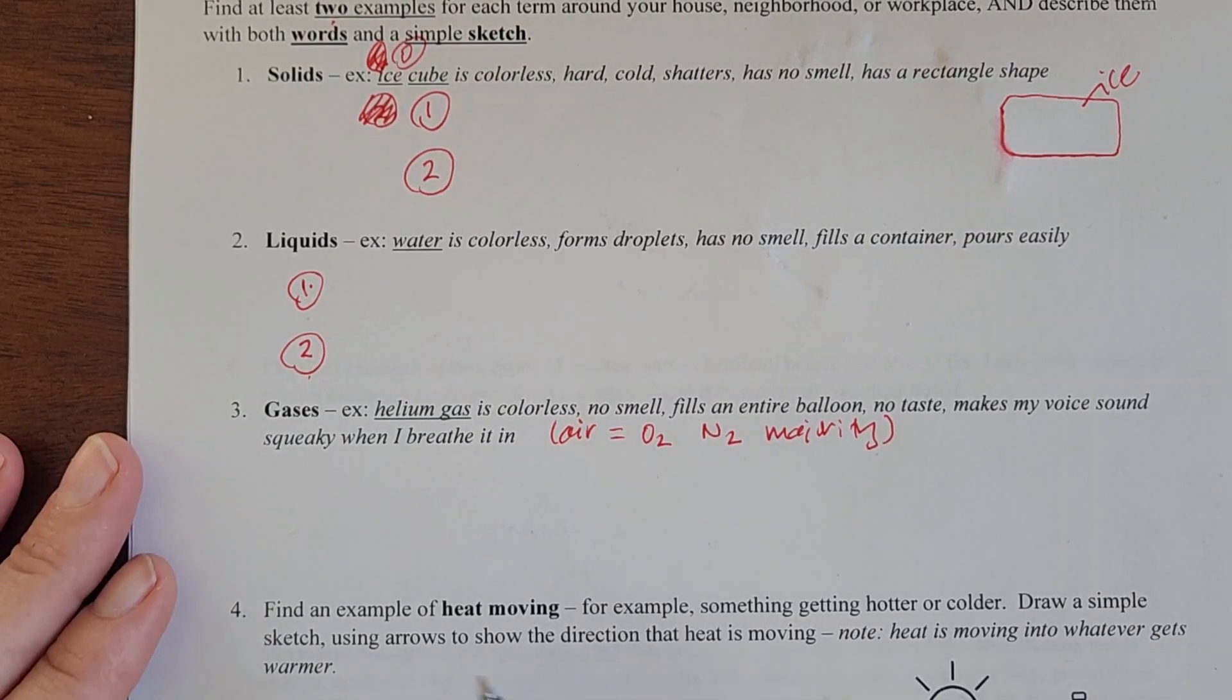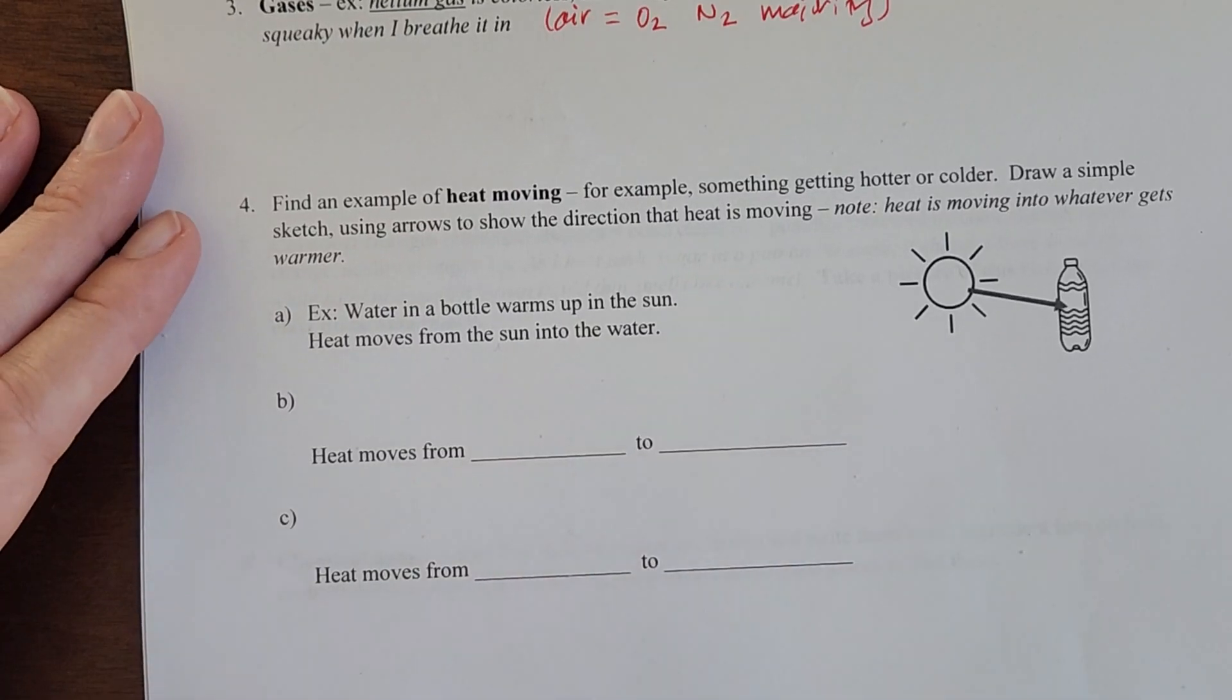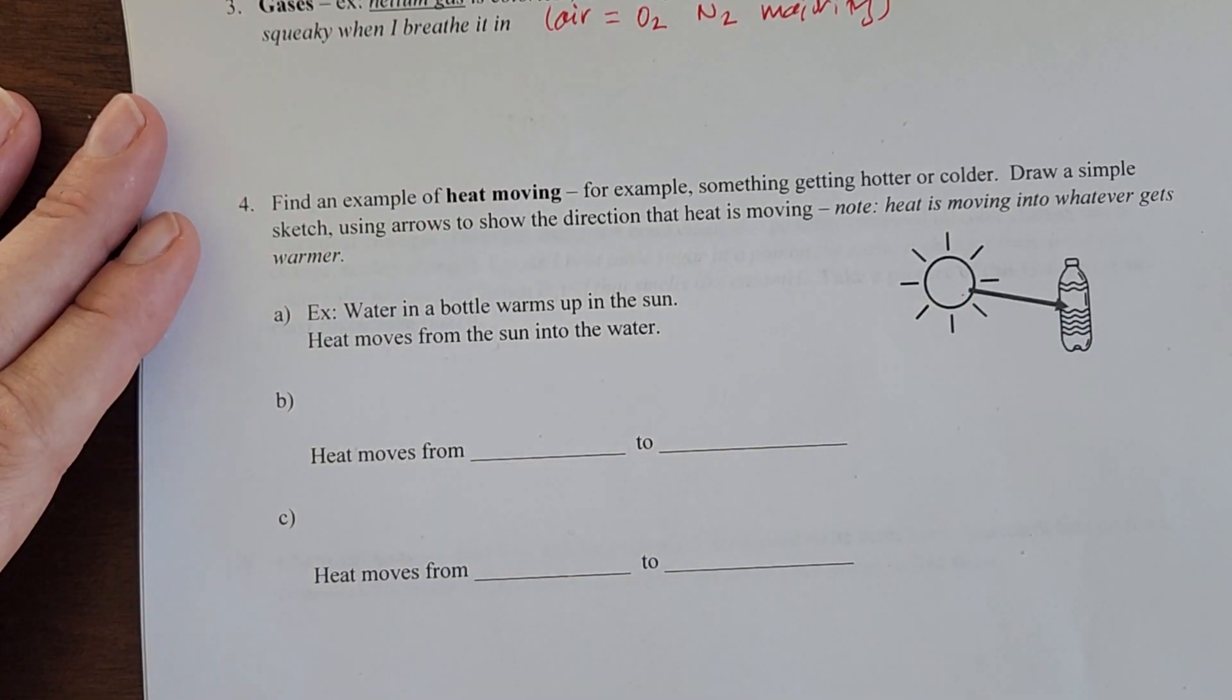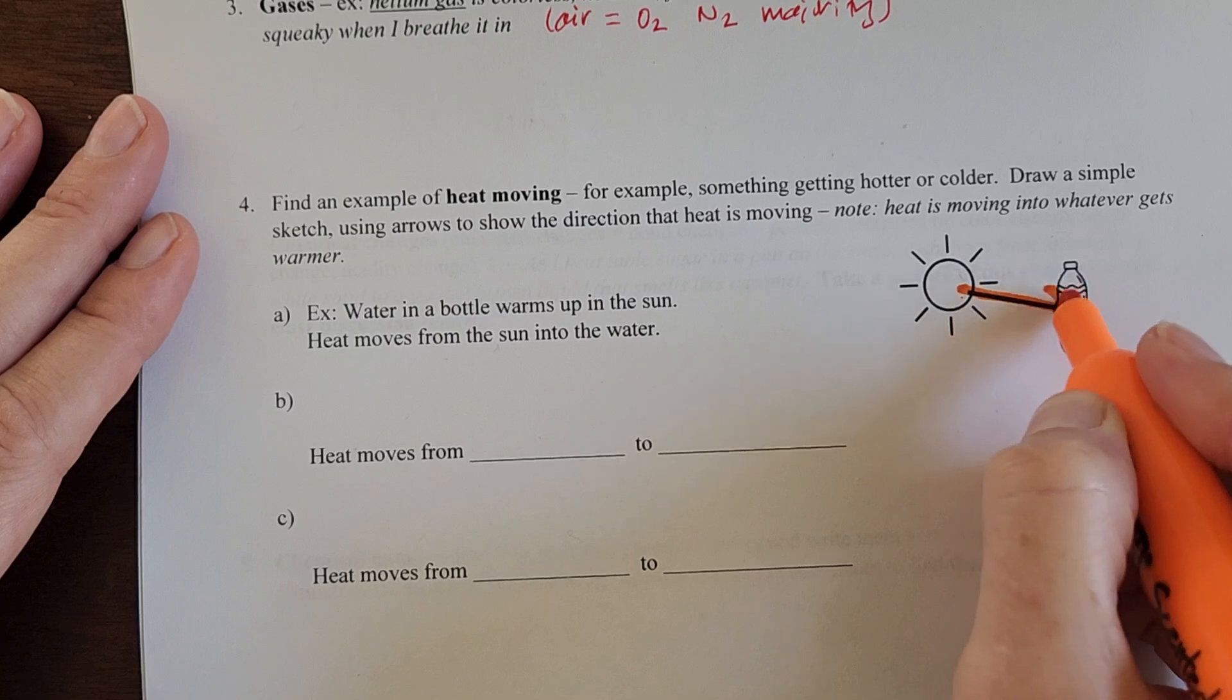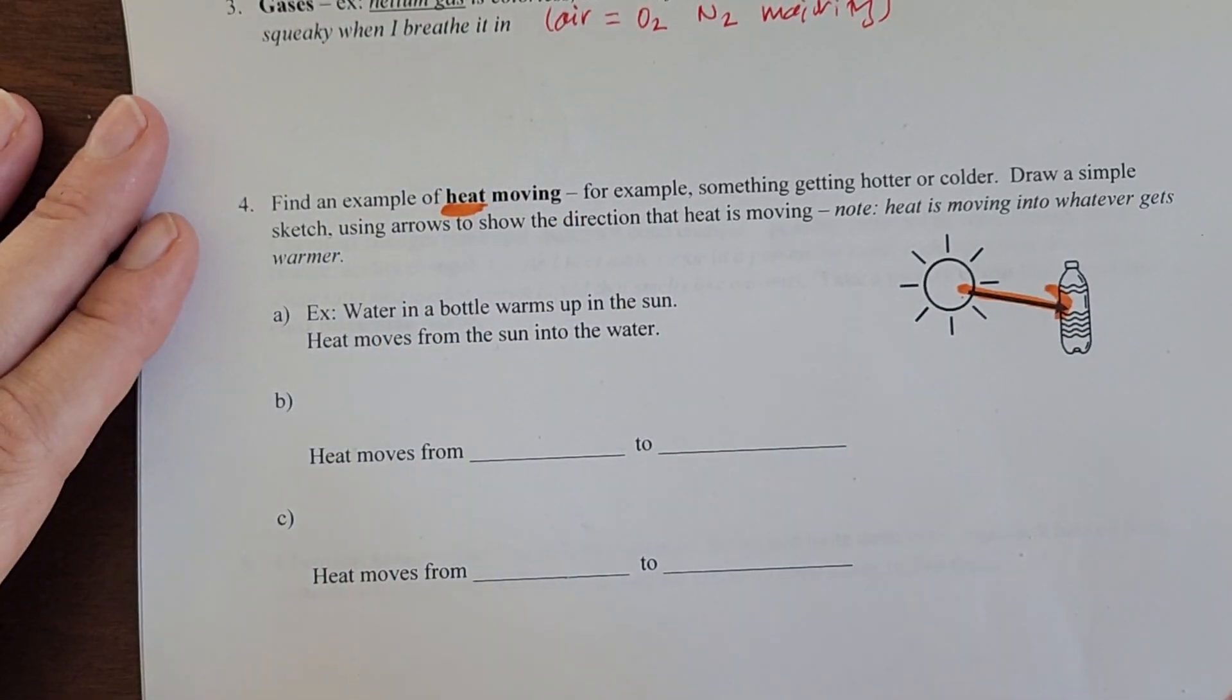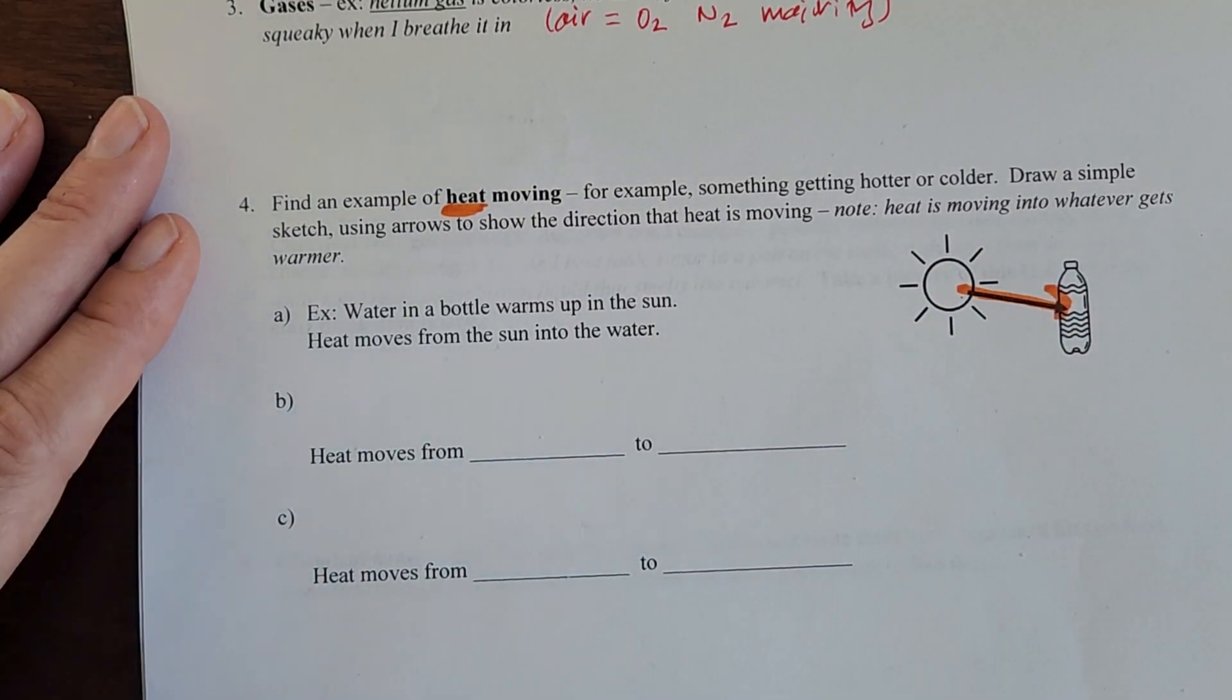Find an example of heat moving. For example, you leave a water bottle out in the sun, you're going to see heat moving into that water bottle. Throughout the semester it helps me to see some repetitive colors, so we will be using orange when we talk about heat or energy.